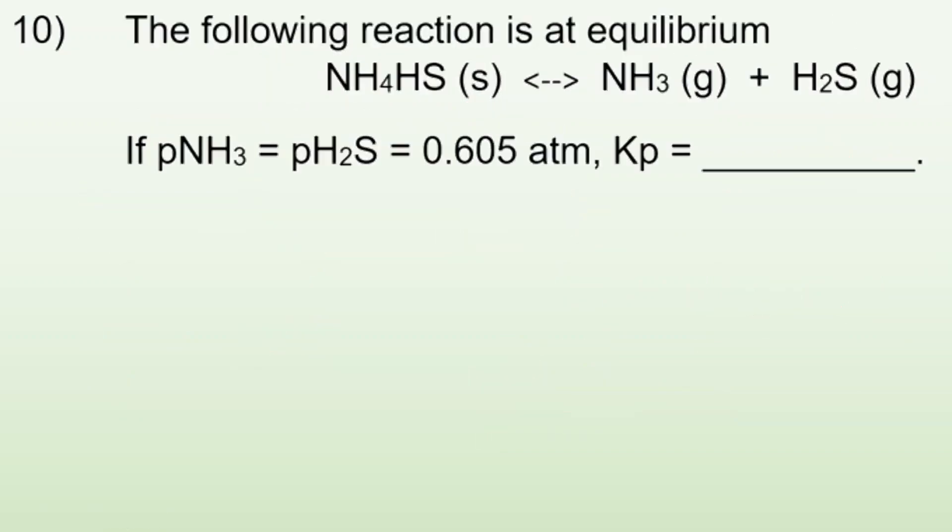The following reaction is at equilibrium. If those are the pressures, Kp equals this. Again, solids drop out. So my Kp expression is really just going to be the pressure of NH3 times the pressure of H2S. So now I can just plug and chuck. Both of those pressures are 0.605, so times 0.605.